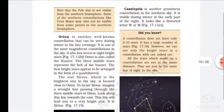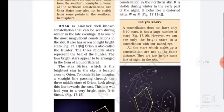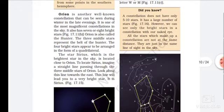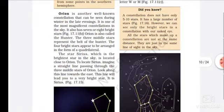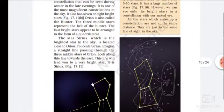Orion is another well-known constellation that can be seen during winter in the late evening. It is one of the most magnificent constellations in the sky. It also has seven or eight bright stars. Figure 17.11(b): Orion is also called the Hunter. The three middle stars represent the belt of the Hunter.